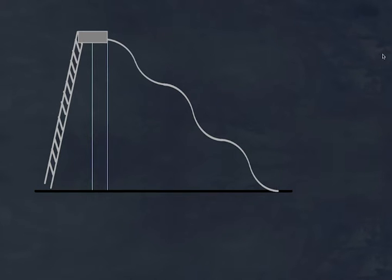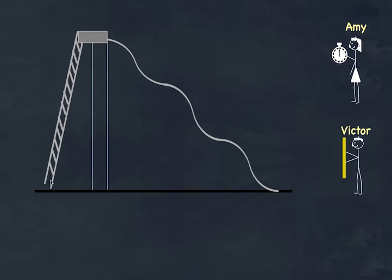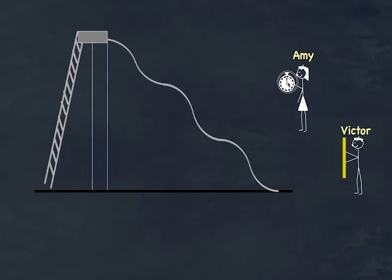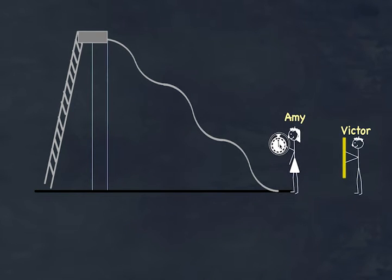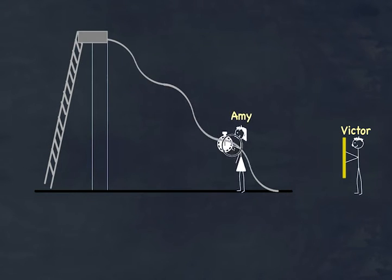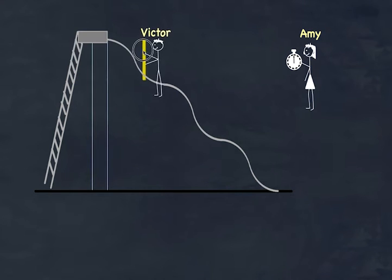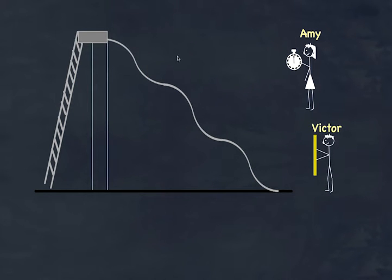Now let's look at a series circuit. Here I have my slide again, and Amy and Victor are going to help with measurements. In this case, Freddy goes up the slide and we see him drop three times — three small drops as opposed to one big drop. Amy measures the rate of people passing, and whether she stands here, here, or anywhere along the line, she gets the same value — it's constant throughout.